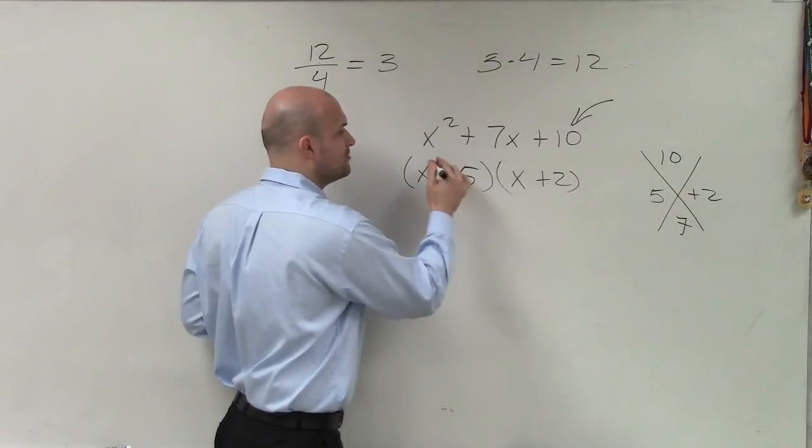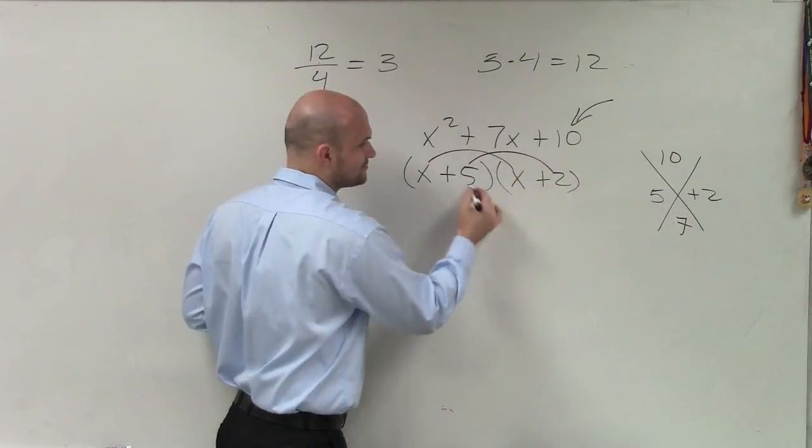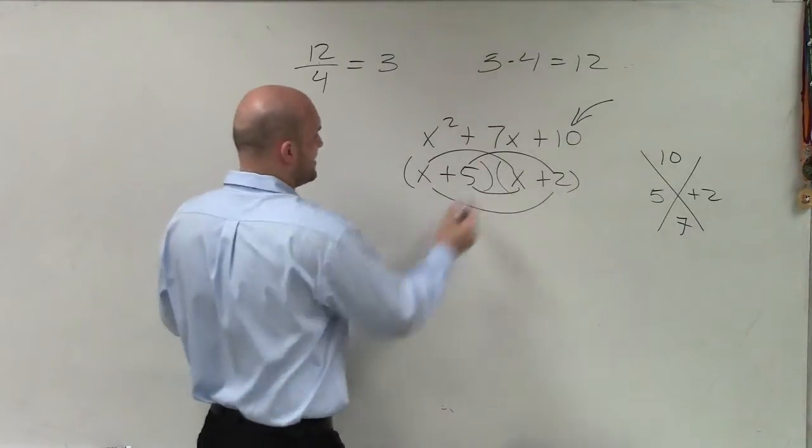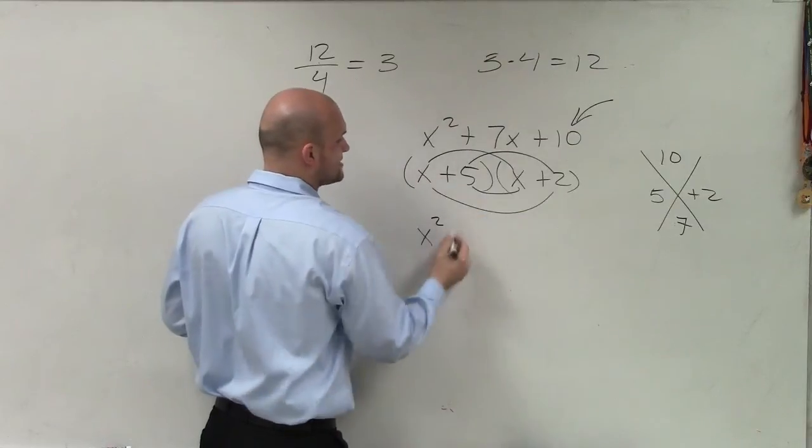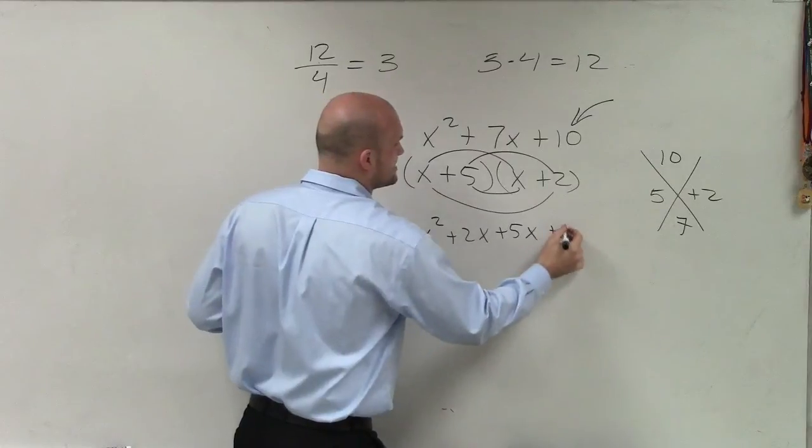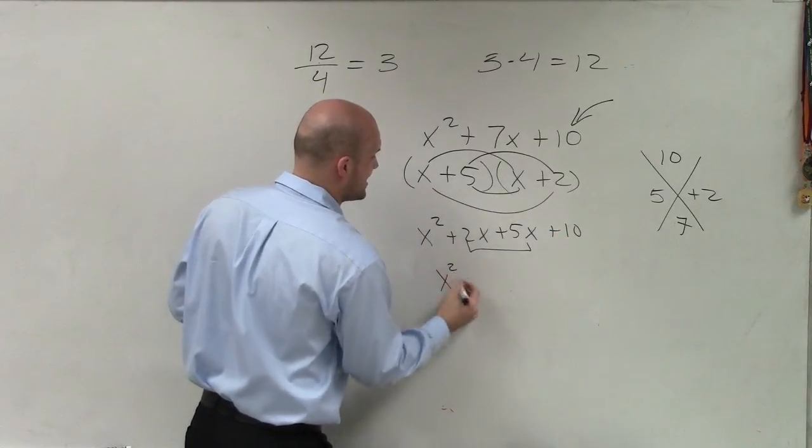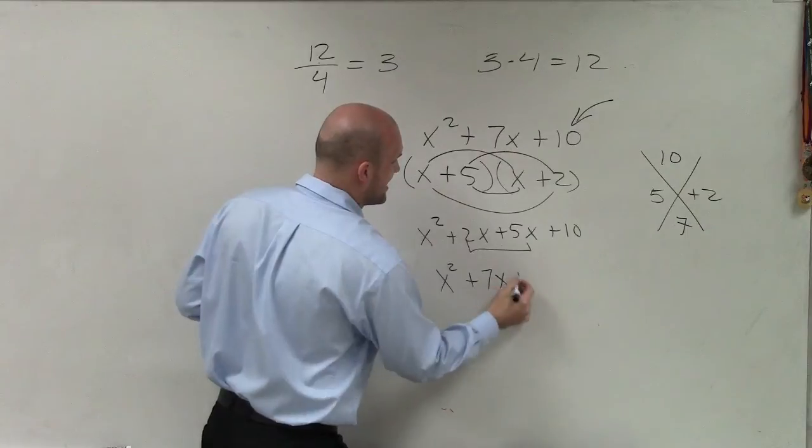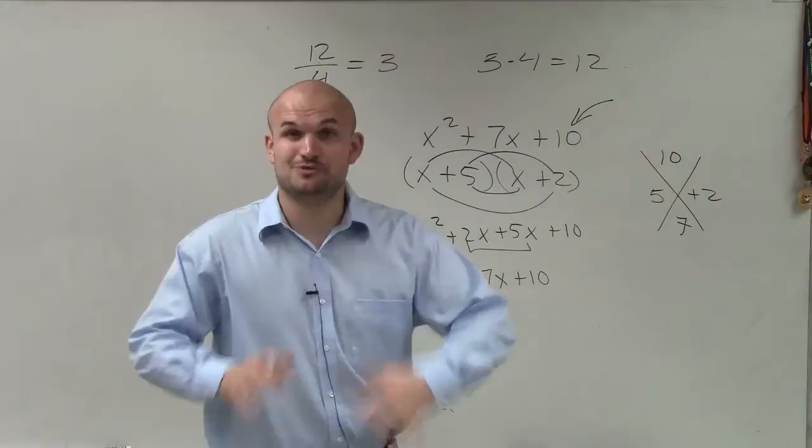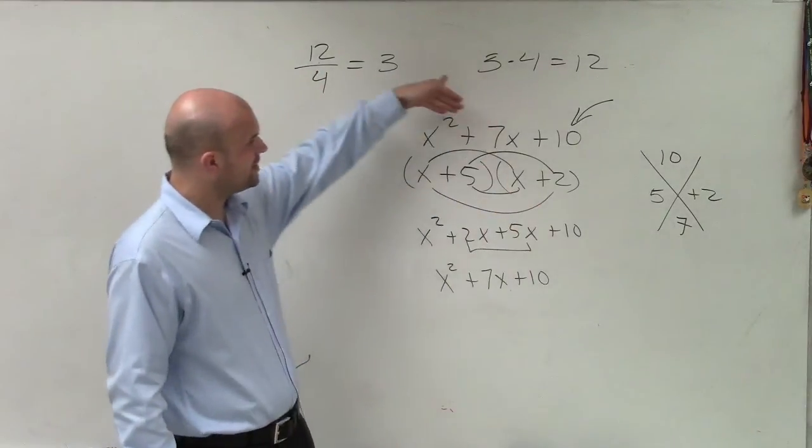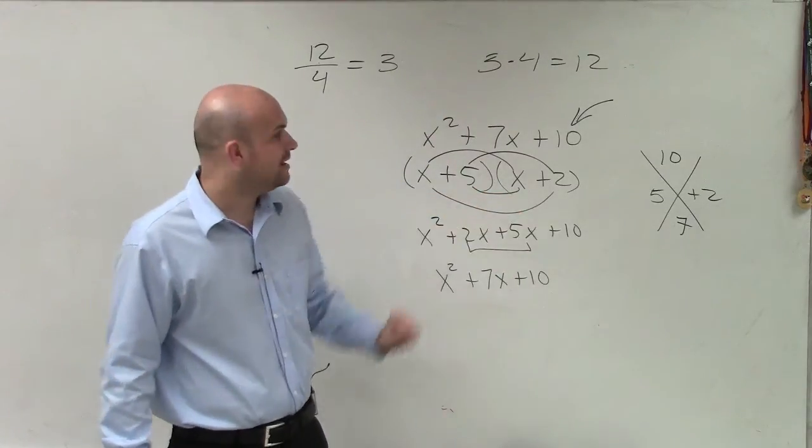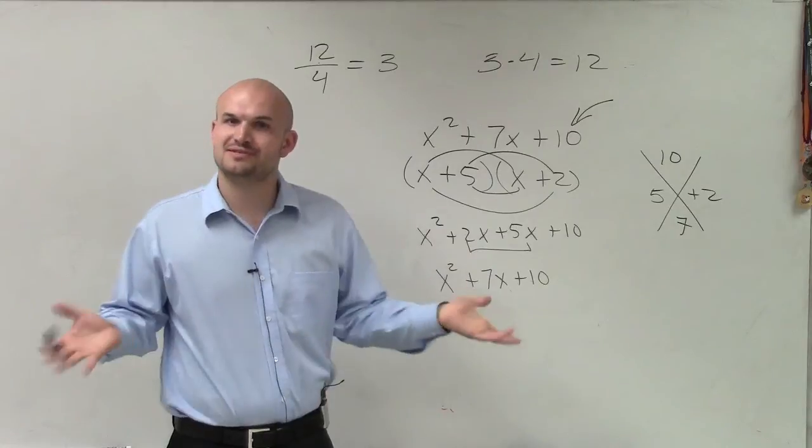And a lot of times when we have a binomial times a binomial, we call that FOIL or anything. But really it's just a nice fancy way of saying applying the distributive property. And if I multiply this out, x times x is x squared, x times 2 is 2x, 5 times x is 5x, and 5 times 2 is 10. Combine my middle terms, x squared plus 7x plus 10. So you can see by applying this factoring technique - and I'm going to teach you a lot more other factoring techniques - but applying this one, we can learn to take this expression and rewrite it as a product. And that's exactly what we're trying to achieve with factoring. So there you go.